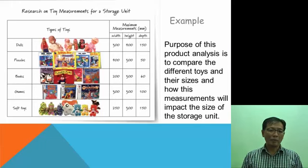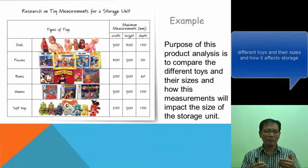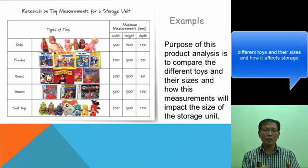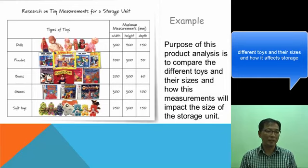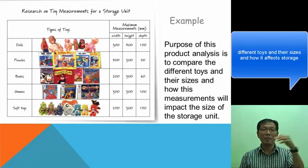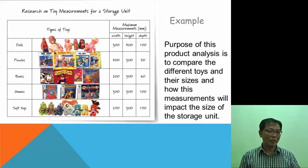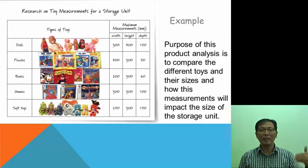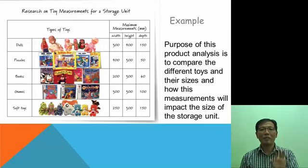Another example is to compare different toys — the sizes and how measurements will affect your stock and the size of the storage space. You have dolls with typical measurements, your puzzles, your books, and so on. You tabulate all this and use it as a form of decision making.